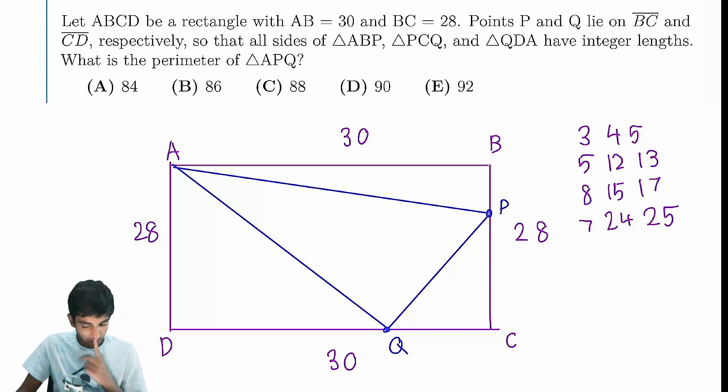Let's take a look at each of these one by one. For 3-4-5, if this is 30, then this could be 40, four-thirds of 30. But 40 is way bigger than 28, so that's not possible.